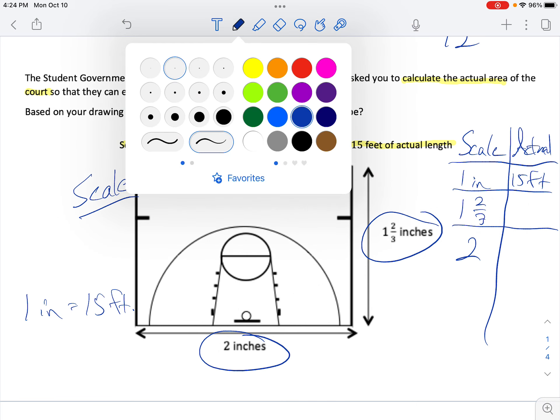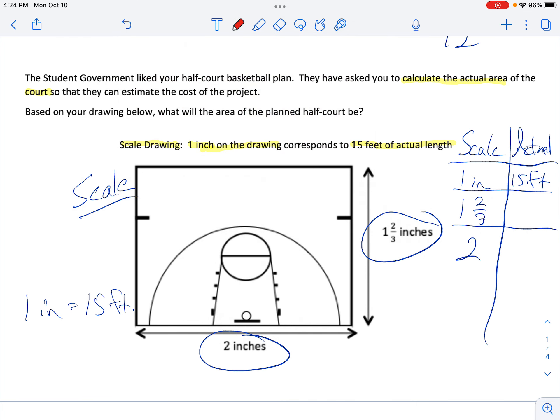Well, I notice here this will be easier to do. When we go from 1 inch to 2 inches, that's times 2. 15 times 2 is 30. So, on the actual, it's going to be 30 feet.